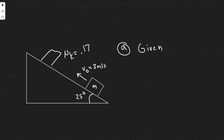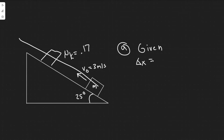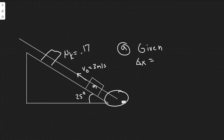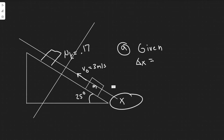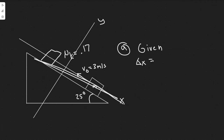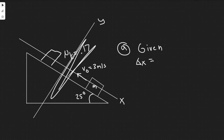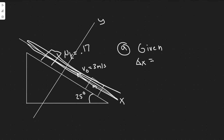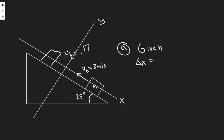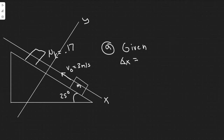I always like to write out all the kinematic variables and determine what we need to solve it. The five main kinematic variables are delta x, v₀, v, a, and t — and since I'm working in the x direction, I'll label them all with x subscripts. Keep in mind: x is parallel to the incline, and y is perpendicular to it.